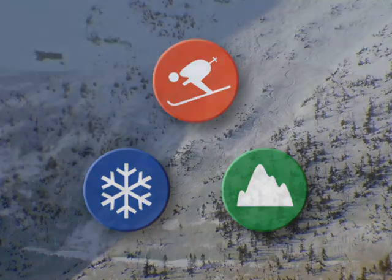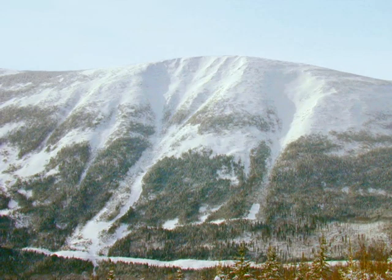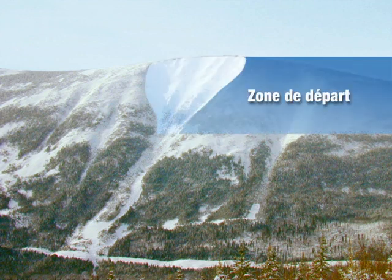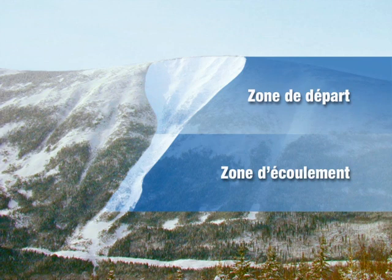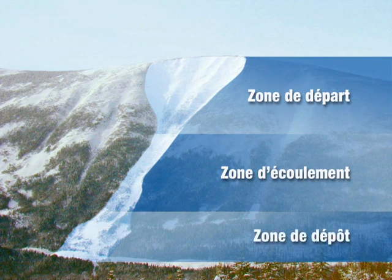Une pente avalancheuse comprend au moins un couloir d'avalanche. Ce couloir se divise en trois zones importantes : la zone de départ, où l'avalanche se déclenche et amorce son mouvement ; la zone d'écoulement, où la neige prend de la vitesse ; et la zone de dépôt, où s'accumulent neige et débris entraînés par l'avalanche.